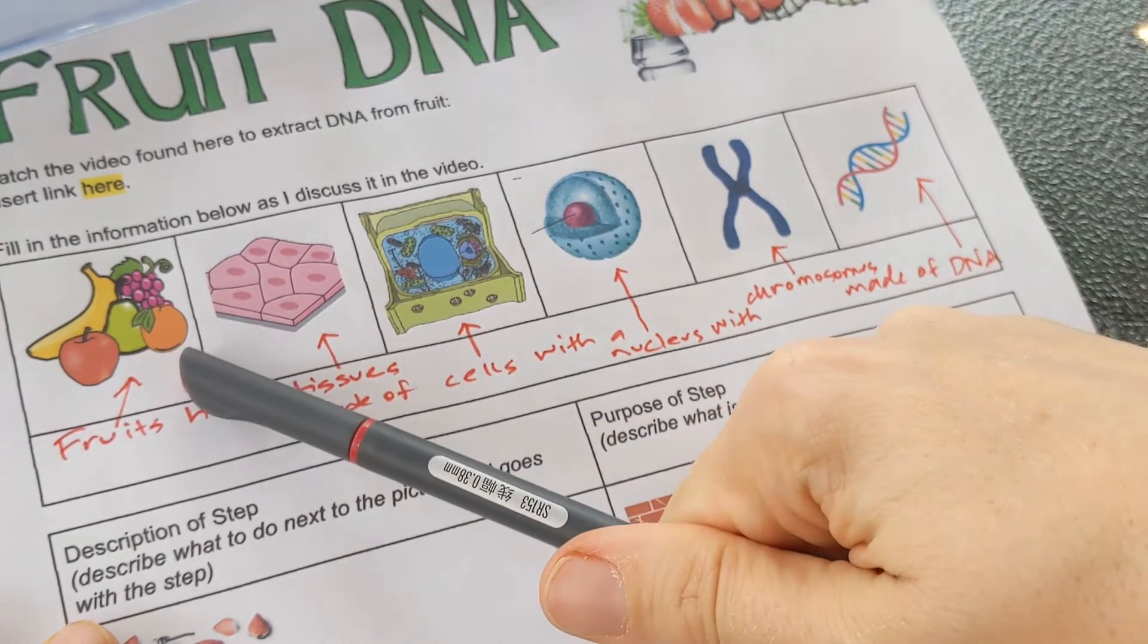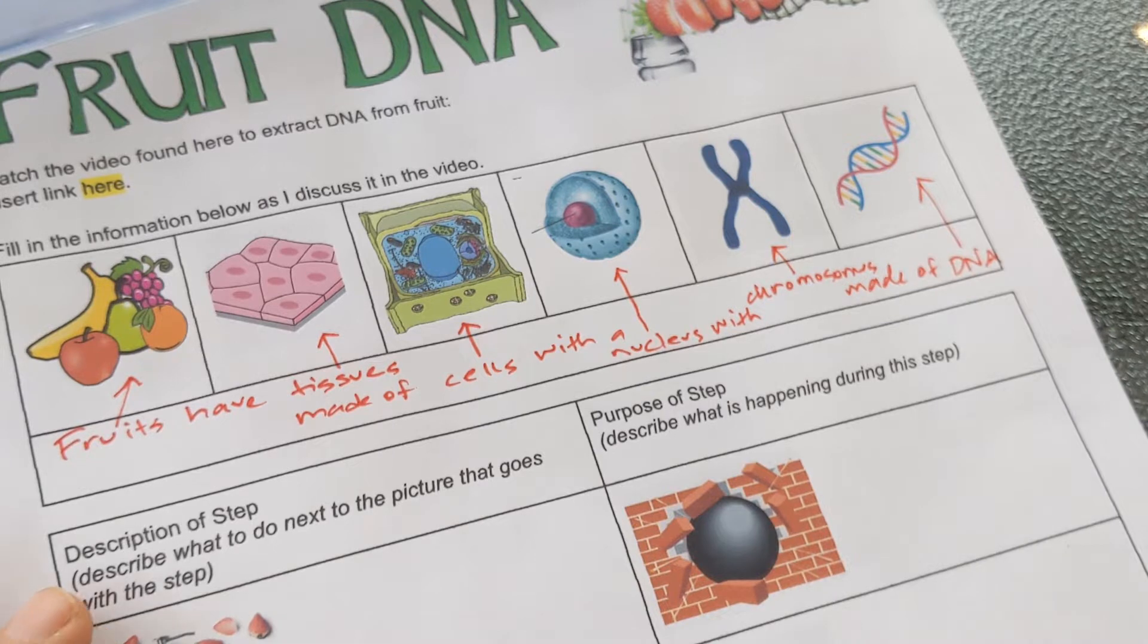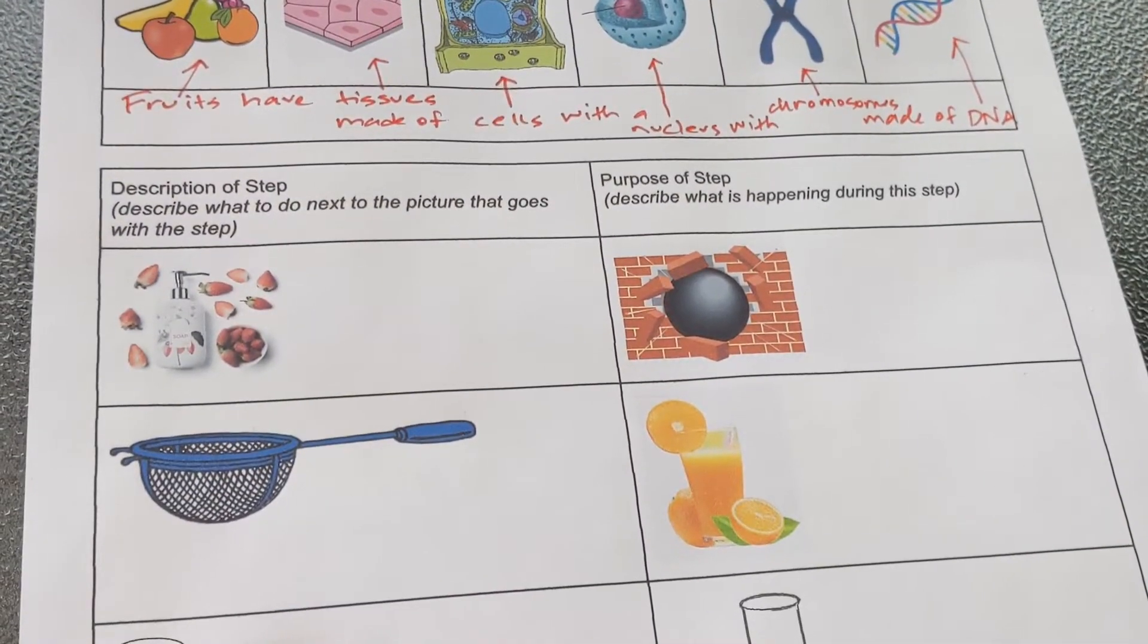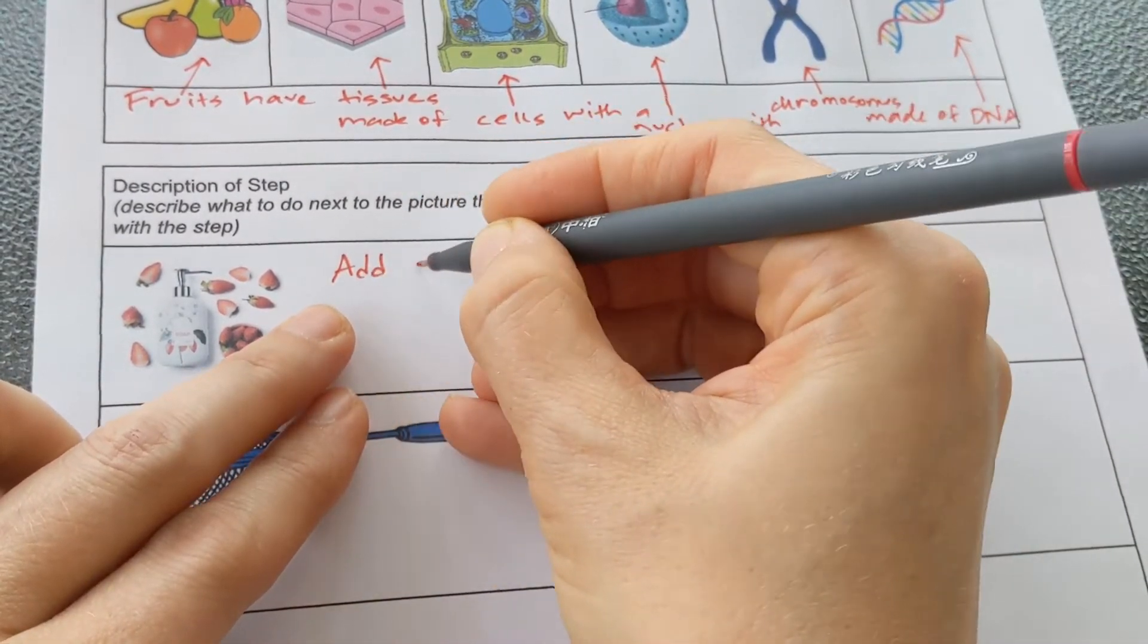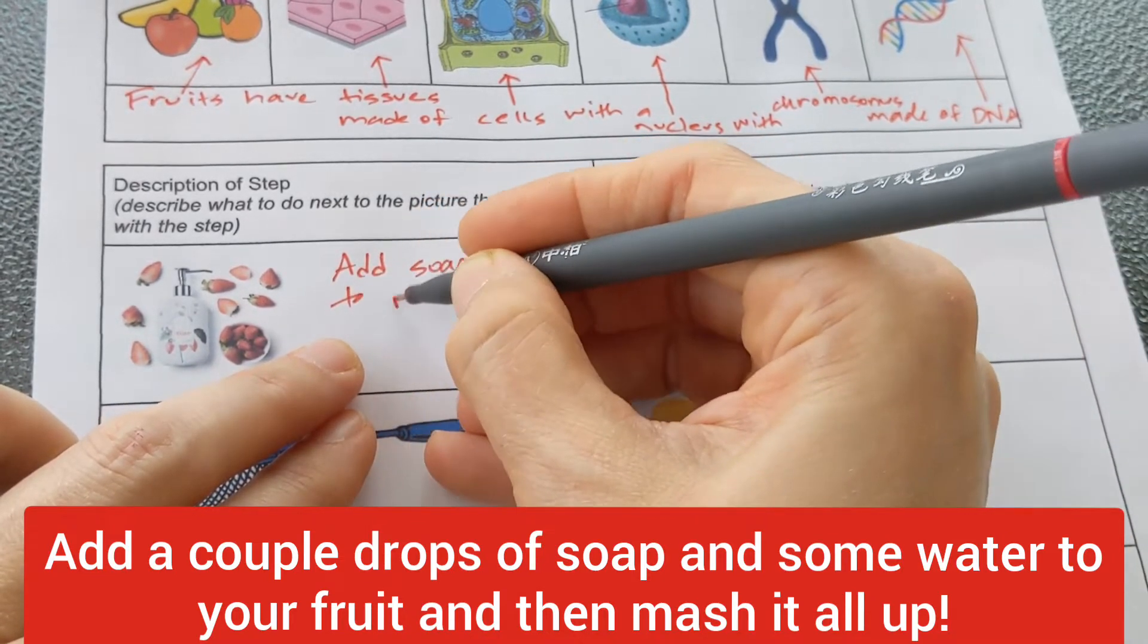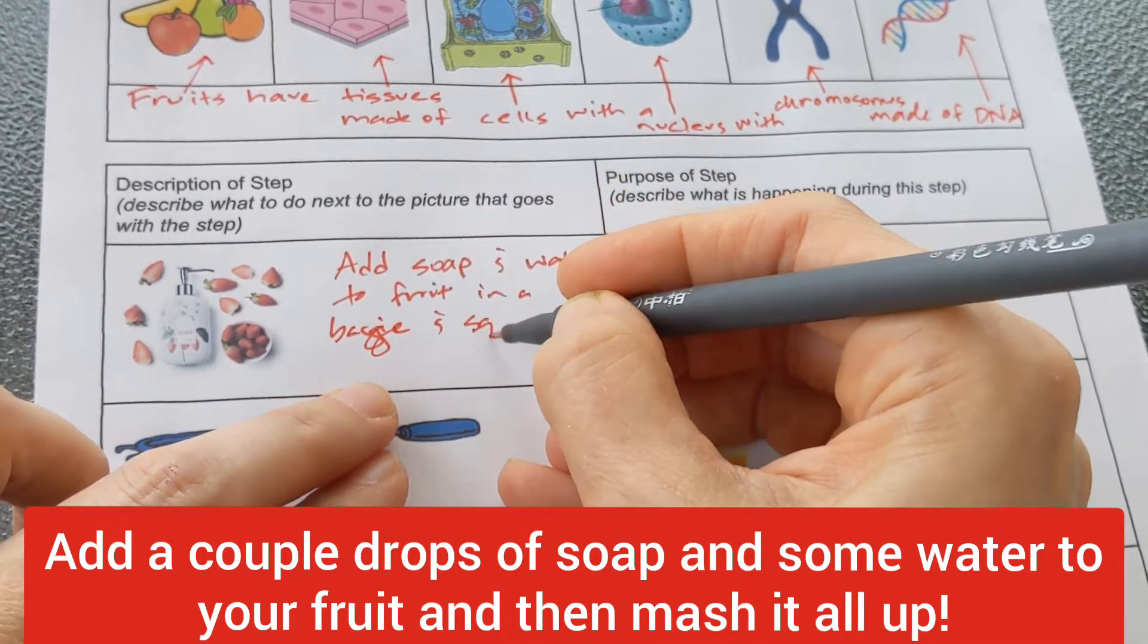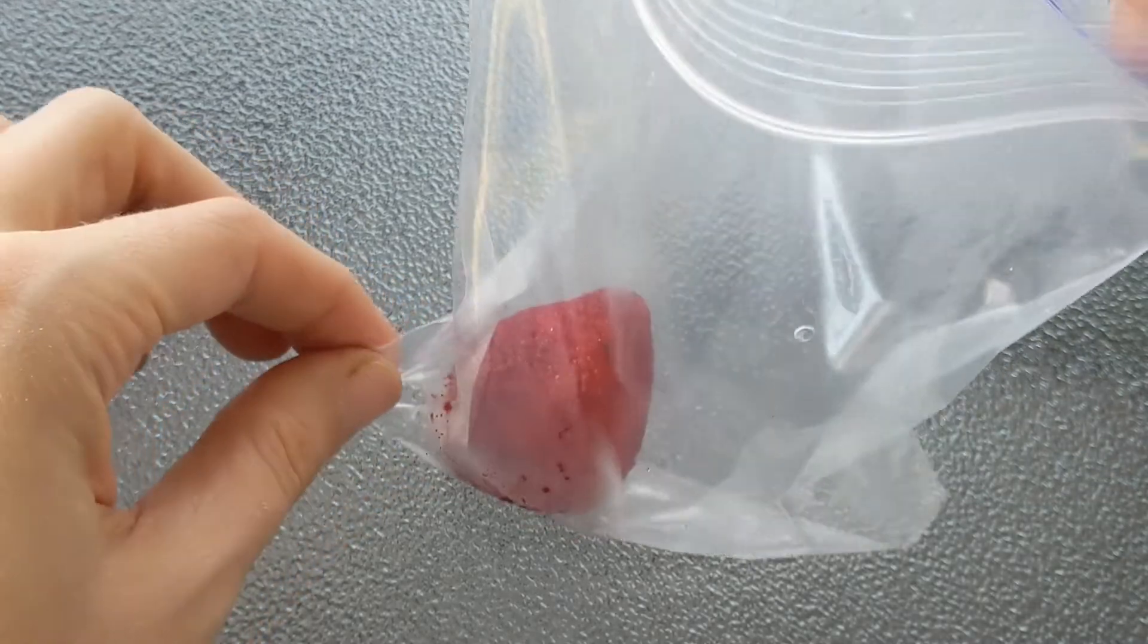So what we're going to do is we're going to take this and we are going to get out this. And there's a multi-step process in order to do this. I'm going to explain each step and then show you each step. And I'm also going to explain what's happening each step of the way. So the first thing that we're going to do is add soap and water to the fruit in a baggie and squish and mix it. You might notice I didn't put specific amounts. And that's because the amounts aren't super important.